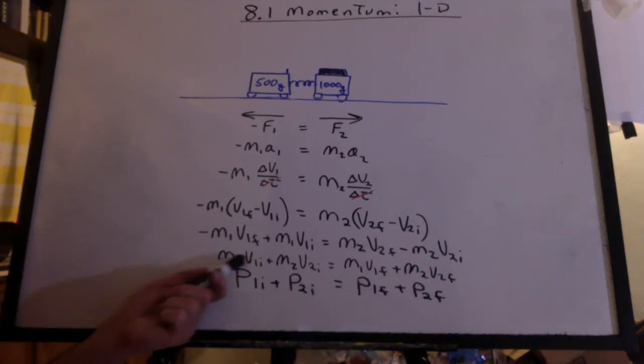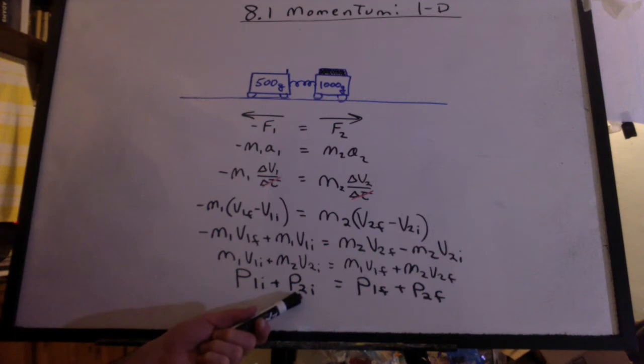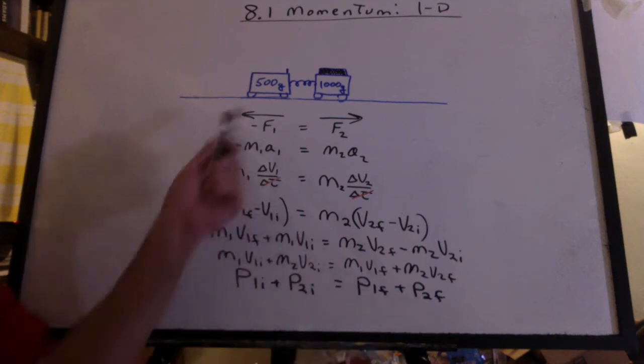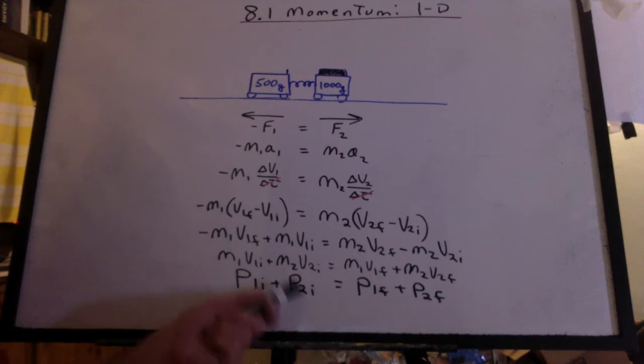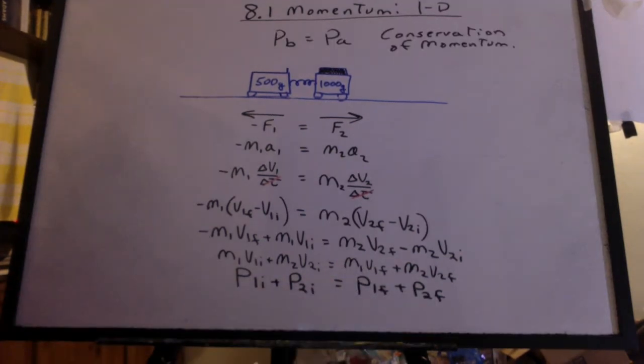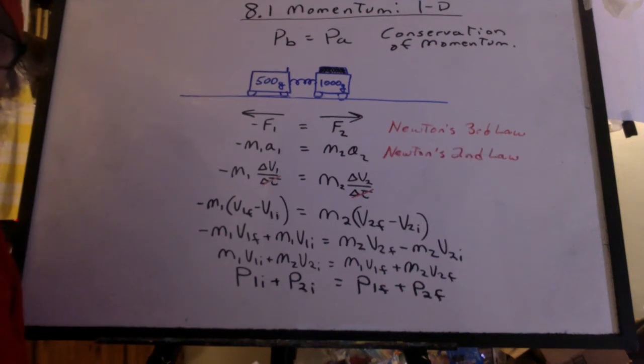Well, this quantity mass times velocity is momentum. And this is the momentum of object one and the momentum of object two before anything happens. That's momentum of object one and momentum of object two after the explosion. Well, this means the momentum before equals momentum after. It's the law of conservation of momentum. Where did it come from? Newton's third law of motion and Newton's second law of motion.